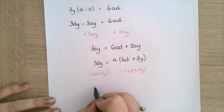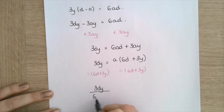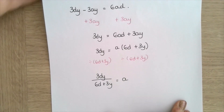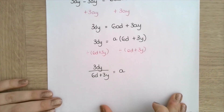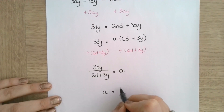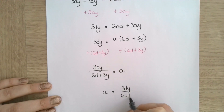So I get 3dy all over 6d plus 3y is equal to a. And finally, just to write it with a on the left hand side: a equals 3dy all over 6d plus 3y.